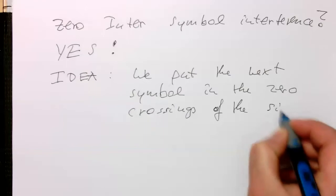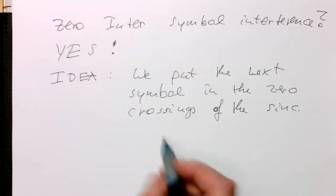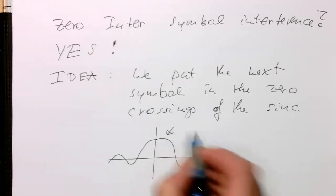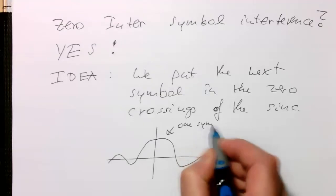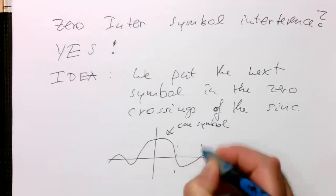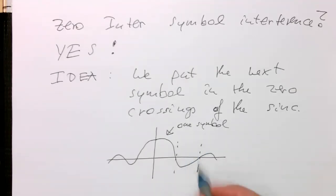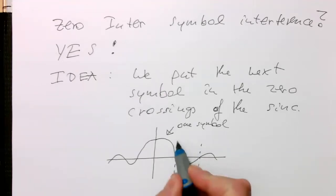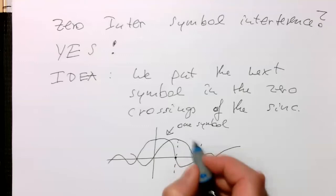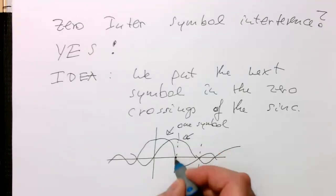Let me try to draw this here. If this is our sinc function representing one symbol, then obviously we have zero crossings here. The earliest chance to place the next symbol is here at this zero crossing. So the next sinc function we just place in here. The next symbol is directly sitting there where the zero crossing of the previous symbol is.